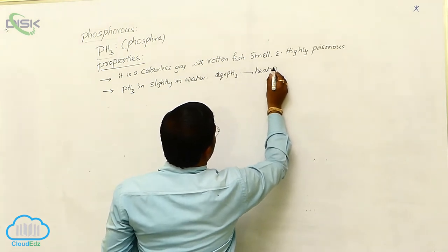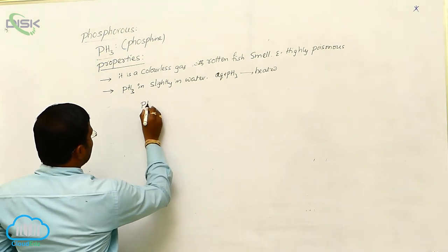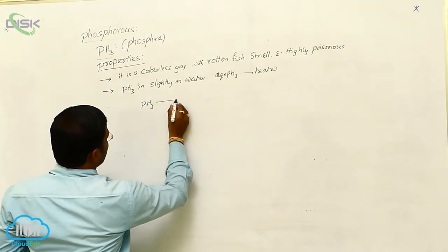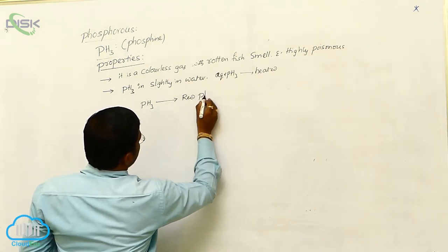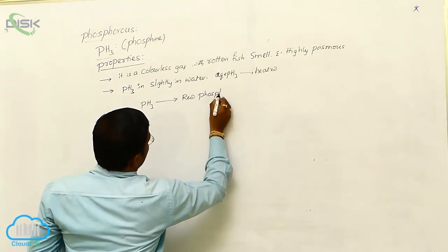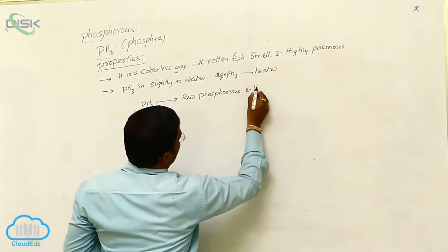When aqueous PH3 heated at high pressures, PH3 dissociates and produces red phosphorus and hydrogen gas.